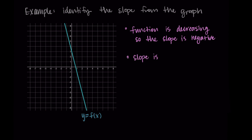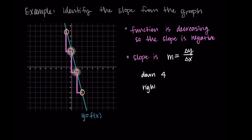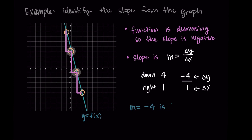The slope is the change in y over the change in x — delta y over delta x. I'm choosing some points where I can clearly tell where they are on the graph: I see points at (-1, 7), (0, 3), (1, -1), and (2, -5). I'll choose (0, 3) and (1, -1) since they're close together. Between these two points, we go down by 4 and right by 1. So delta y is negative 4 and delta x is 1, giving negative 4 over 1, which simplifies to negative 4. So our slope is negative 4.